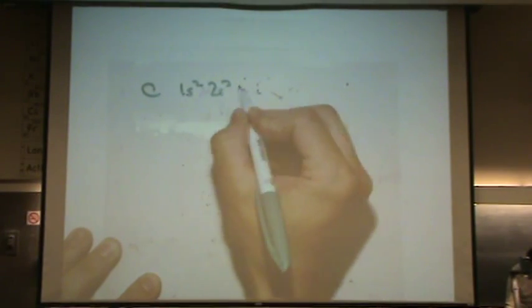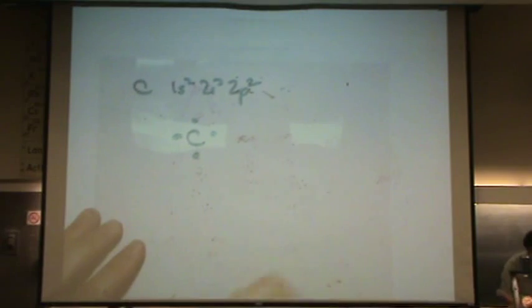So carbon is 1s2, 2s2, 2p2. You really have to know this when you enter organic chemistry class. It has a Lewis symbol that looks like this, with four unpaired electrons it can bond with.